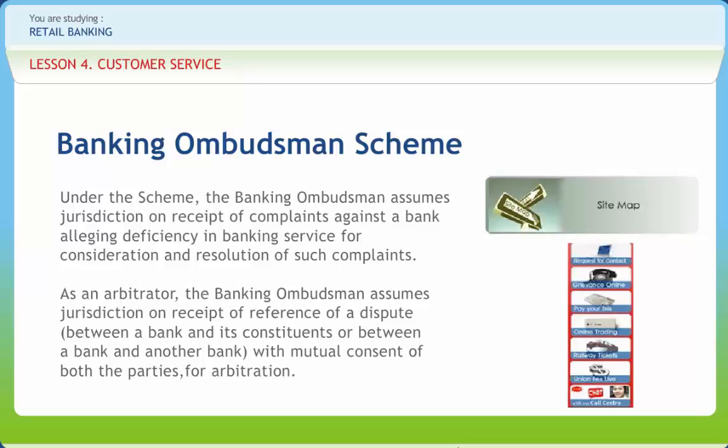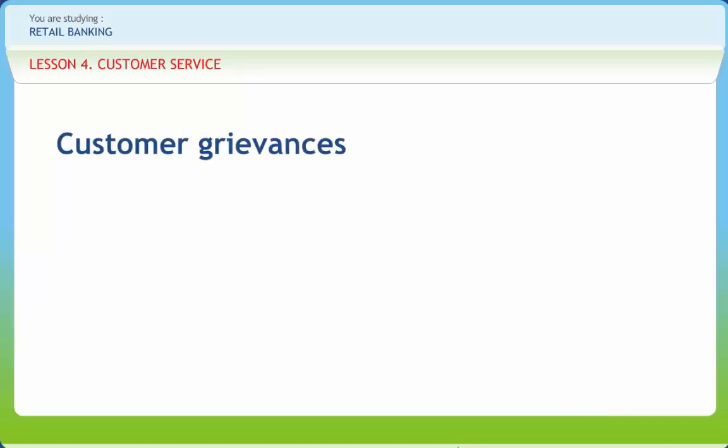The Banking Ombudsman functions as an arbitrator in respect of any dispute between a bank and its constituents, or between a bank and another bank, referred to him for arbitration with mutual consent of both parties, provided that the value of the claim in such dispute does not exceed Rs. 10 lakhs. After assuming charge as an arbitrator, if the Banking Ombudsman feels at any stage that he is unable to perform his function independently without having any personal interest, he shall decline to continue as an arbitrator.